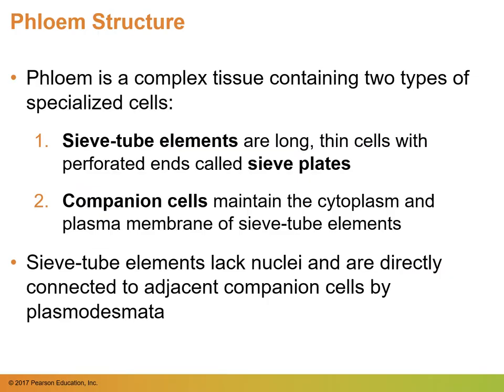Phloem is made up of living cells and they transport up and down throughout the plant. Phloem is a compact tissue containing two types of specialized cells: the sieve tube elements, which are long thin cells with perforated ends called sieve plates, and companion cells maintaining the cytoplasm and plasma membrane of sieve tube elements. Keep in mind that sieve tube elements lack nuclei and are directly connected to adjacent companion cells by plasmodesmata, and we will go into this later to talk about sugar transport.